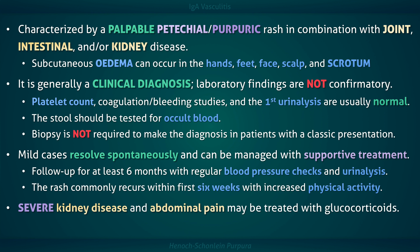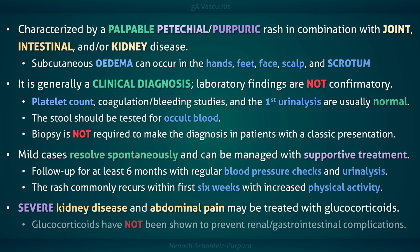Abdominal pain that is severe can be treated with systemic glucocorticoids, which can provide symptom relief but do not otherwise alter the clinical course of the disease. Glucocorticoids have not been shown to prevent either renal or gastrointestinal complications, and thus should not be given prophylactically for that purpose.